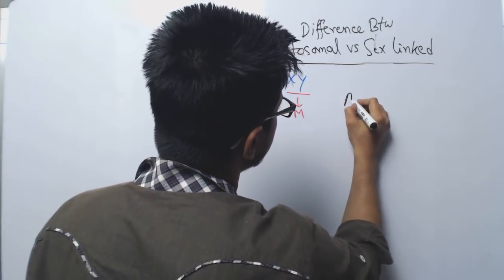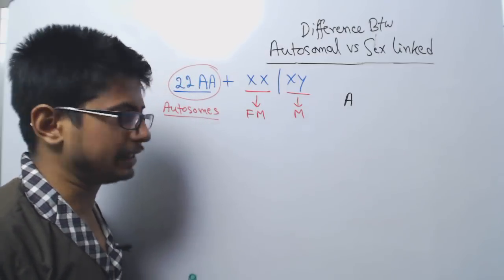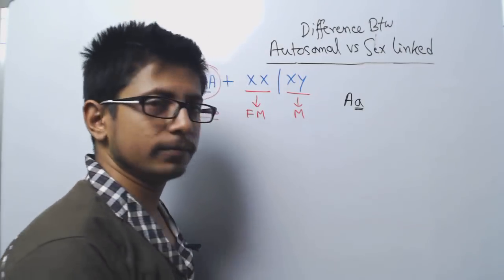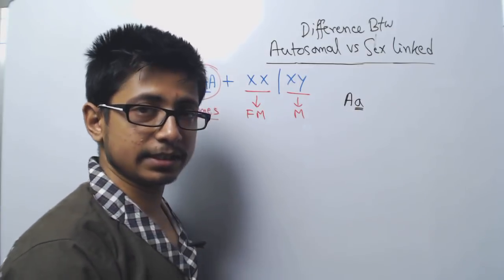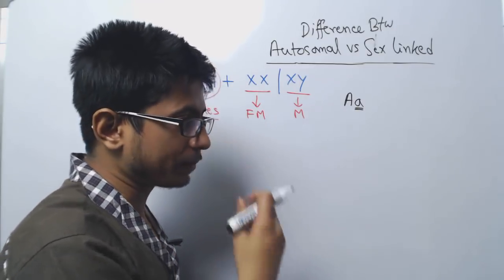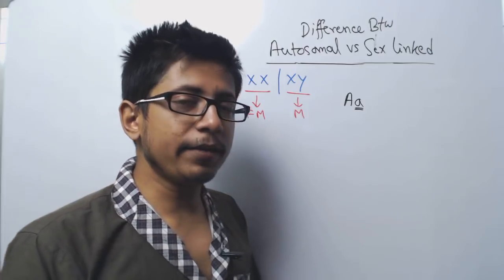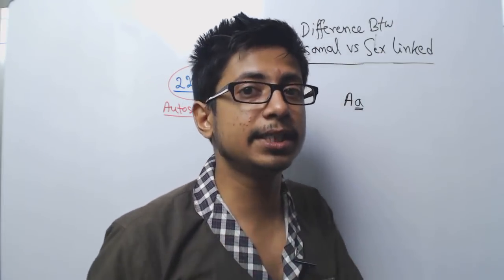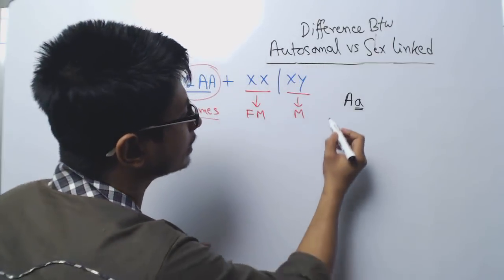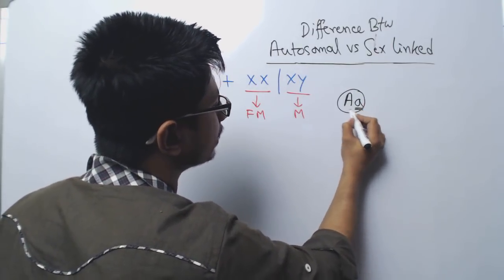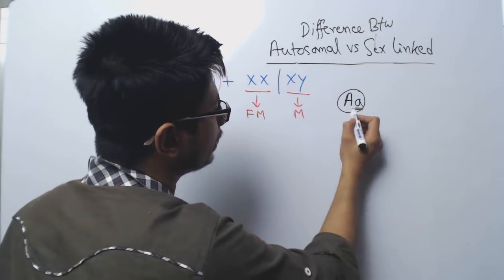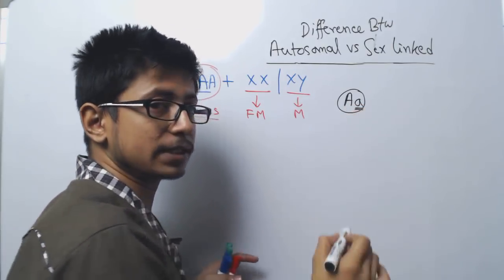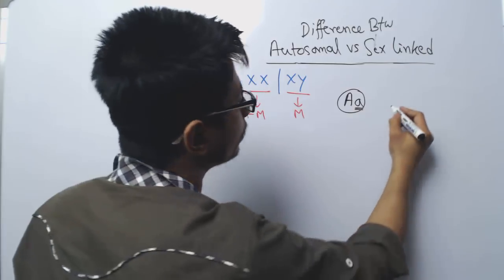Let us say the disease is autosomal and small 'a' represents the faulty allele. If small 'a' is present, the disease is there — it is a recessive type of disease. That means both alleles must be recessive for the disease to show up. Capital 'A' is the dominant form; even if small 'a' is present alongside capital 'A', the disease will not show up.